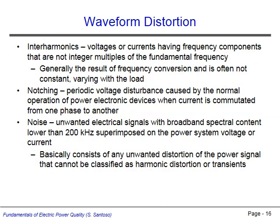Interharmonics are components of voltage or current waveforms that oscillate at a frequency that is not an integer multiple of the fundamental frequency. Interharmonics occur due to loads with frequency converters present in the system. Notching is a periodic fluctuation in voltage that is both sharp and brief, caused by switching functions in power electronic devices. Noise is electrical signals with broadband spectral content below 200 kHz that is superimposed on the voltage or current waveforms of the system. Noise is something of a catch-all term for unwanted distortion that cannot be classified into one of the categories previously discussed.